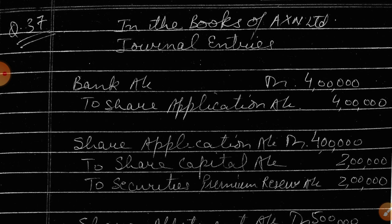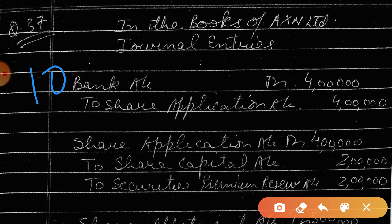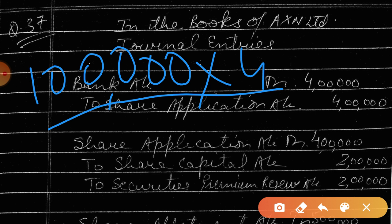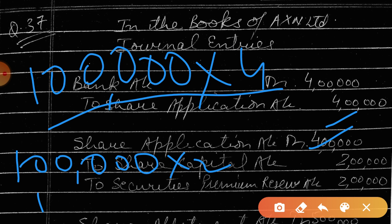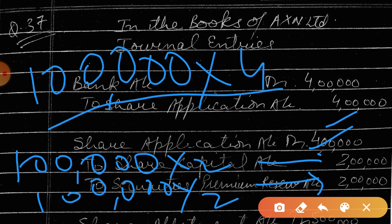In the books of AXN Limited — journal entries. So how many shares are there? One lakh. And what is the amount of application? Four rupees. That means all shareholders will pay the application, because once they pay then only they will get the shares. That means it will include securities premium. So this four lakh amount is clear to you — one lakh into two for share capital and one lakh into two for securities premium.